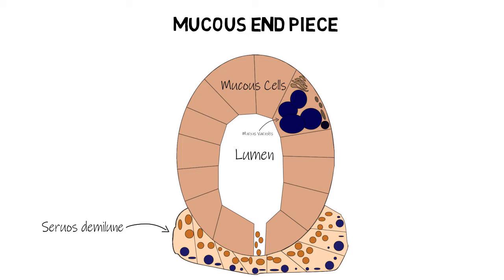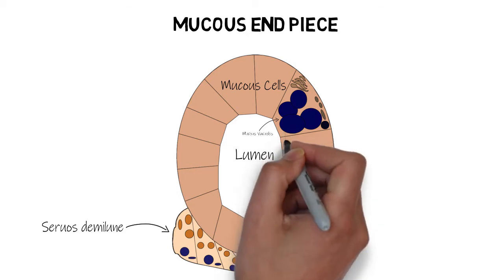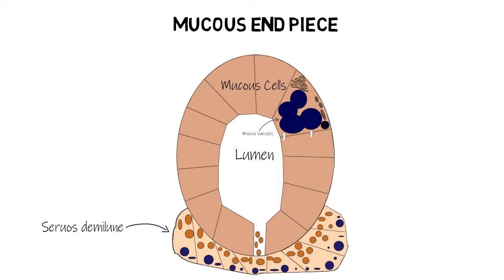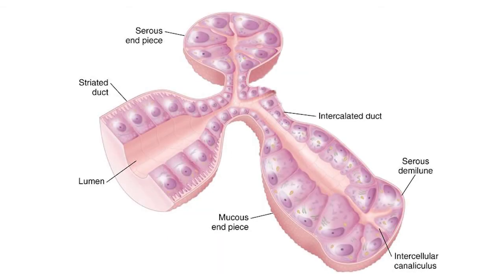The Golgi complexes first give rise to small granules which eventually increase in size and join the other granules. Mucous cells, just like serous cells, are joined to one another by various cell junctions, but they lack intercellular canaliculi — except in cases where the serous demilune is covering them. If a mucous end piece lacks the serous demilune, it will most likely also lack the intercellular canaliculi.